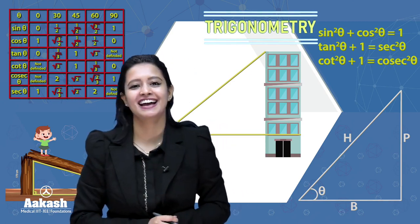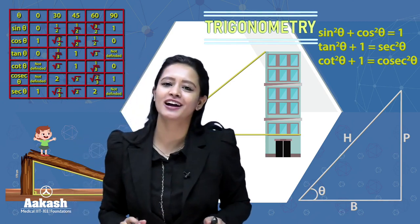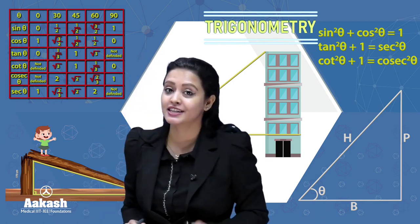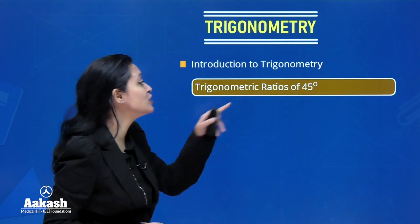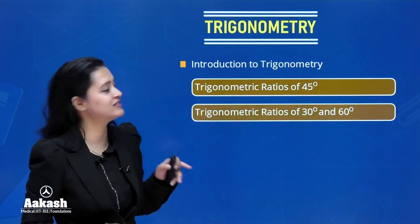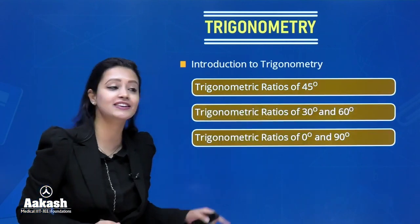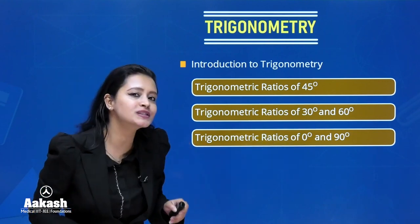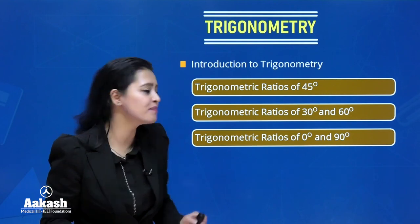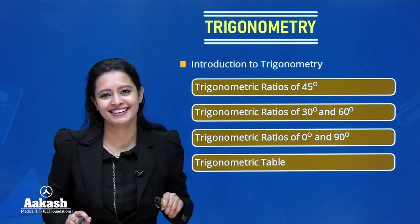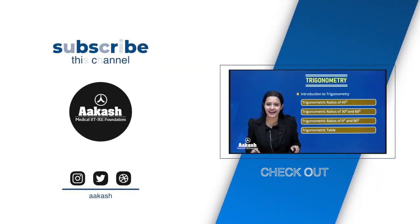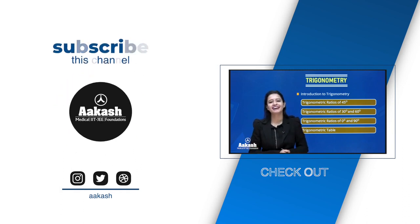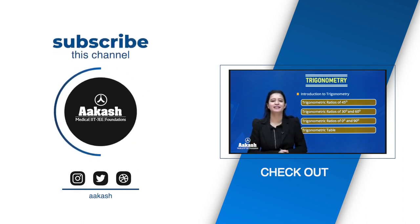Hello students, welcome to the session. I know a lot of you struggle with memorizing the trigonometric table. In today's session, we are going to discuss the trigonometric ratios of 45 degrees, 30 degrees, 60 degrees, 0 degrees, and 90 degrees, and we are also going to see the ultimate trick for memorizing the trigonometric table. Do watch this video till the very end, give us a like, and subscribe to never miss an update.